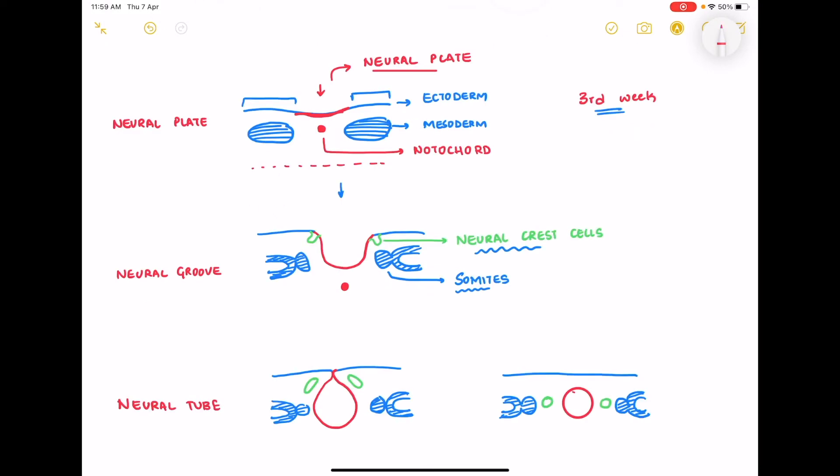Further on the neuroectoderm becomes further deeper and the two ends of the surface ectoderm comes closer to close and separate out the neuroectoderm from the surface ectoderm to form the neural tube. And along with that you have the neural crest cells coming to lie beside your neural tube.